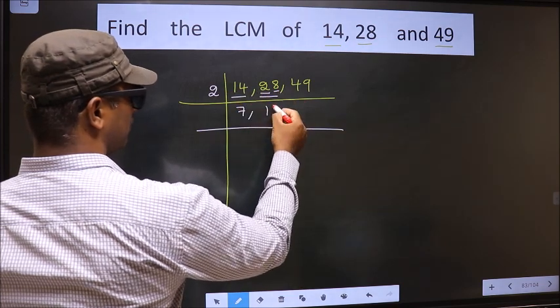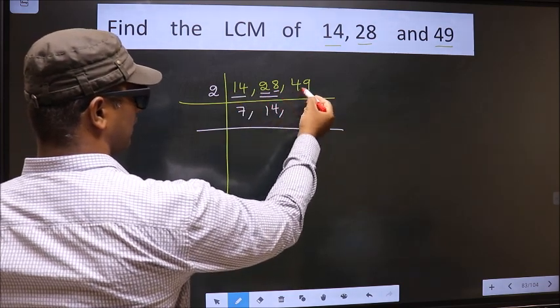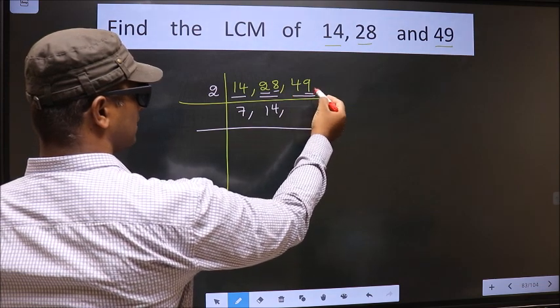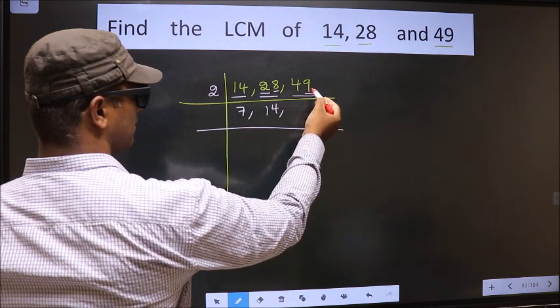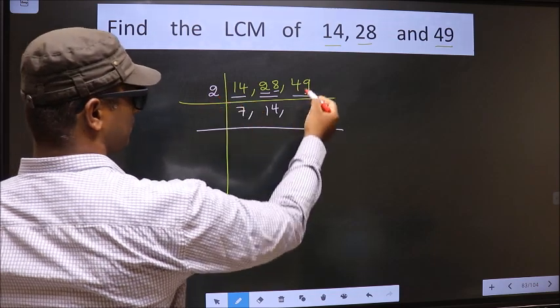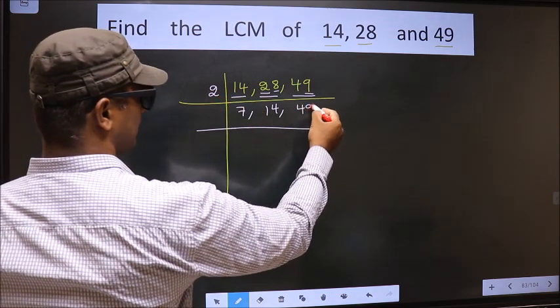The other number 8, when do we get 8 in 2 table? 2, 4, 8. Now the other number 49, last digit 9, not even. So this number is not divisible by 2. So we write it down as it is.